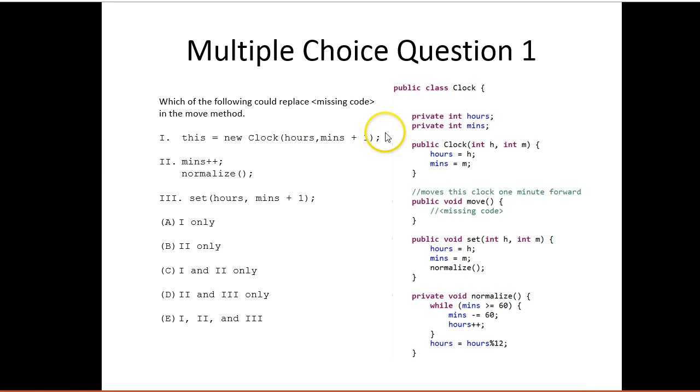So we can eliminate three of the answers simply by realizing that option one isn't valid. Option two is valid because option two is going to increase mins, and then it's going to invoke the normalize method, which is down here, which is going to account for that situation where minutes passes 59. And option three is valid because if we call set hours minutes, we notice the set method here actually normalizes inside of it. So the answer is two and three.